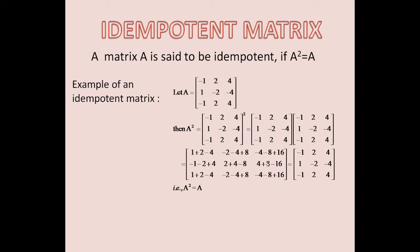So when you evaluate the multiplication, you are getting: plus 1, plus 2, minus 4; minus 2, minus 4, plus 8; minus 4, minus 8, plus 16. And for the other rows: minus 1, minus 2, plus 4; 2, plus 4, minus 8; 4, plus 8, minus 16. And: 1, plus 2, minus 4; minus 2, minus 4, plus 8; minus 2, minus 4, plus 8; minus 4, minus 8, plus 16.